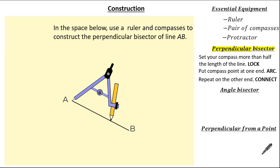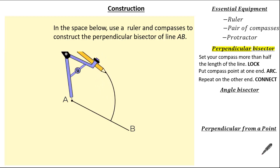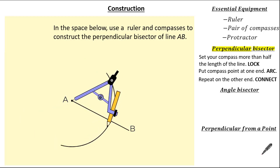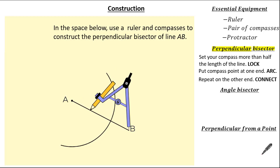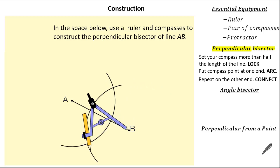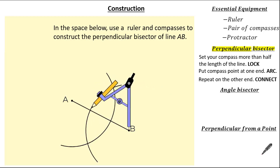Put your compass point at one end of the line and arc above the line and arc below the line. Now move your compass point to the other end of the line, ensuring we don't change the distance between the compass point and our pencil, and then arc above and below. Removing our compass, you can see two points of intersection, so we're going to simply connect.